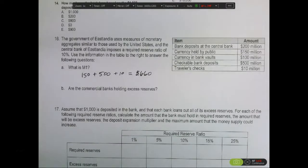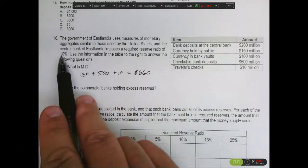This question is asking us to figure out whether the banks are holding excess reserves. So one thing we need to know is what the reserve ratio is, and we see here that it's 10%.